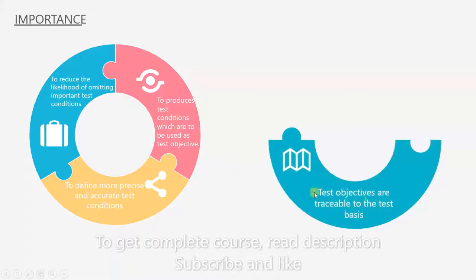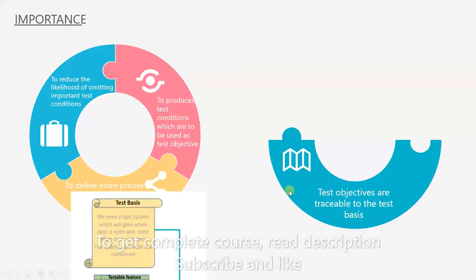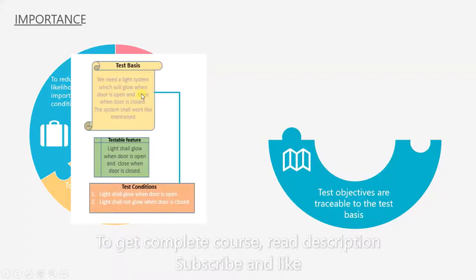Another reason is test objectives are traceable to the test basis. We talked about this in our last video. You have test pieces here and test conditions here, and what this point means is that we can provide traceability between the two.